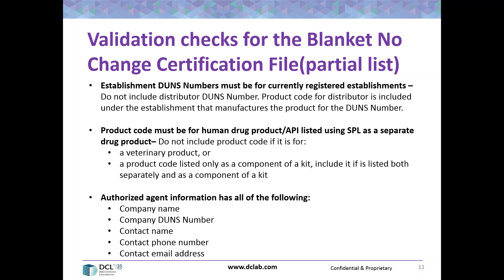Product codes must be for a human drug product or API listed using SPL as a separate drug product. Do not include a product code if it is for a veterinary product, or a product code listed only as a component of a kit — include it only if it is listed both separately and as a component of a kit.